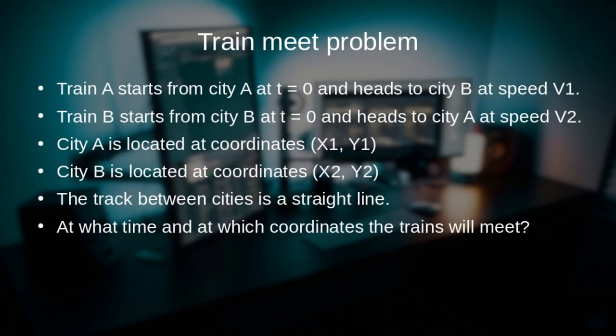If you recall how to solve this problem from your school knowledge, you should know that first we need to define the distance between cities. Then we need to define the speeds of individual trains. Then we need to compute the combined speed at which those trains approach each other.